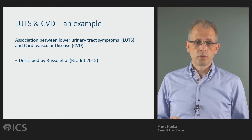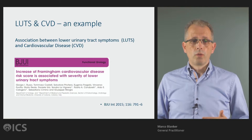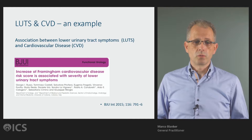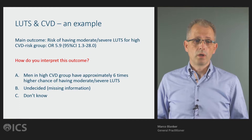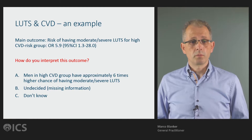It is illustrated by an article published by Russell et al., titled "Increase of Framingham cardiovascular disease risk score is associated with severity of lower urinary tract symptoms." The main outcome of that study was that the risk of having moderate to severe lower urinary tract symptoms for the high cardiovascular disease group had an odds ratio of 5.9, with a confidence interval of 1.3 to 28.0.